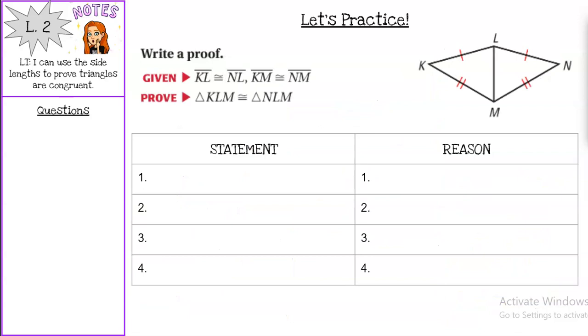And our last piece, we're going to do a proof. So write a proof. If we're given that KL is congruent to NL, and you can see that marked here with our little tick marks, so I'm going to put that statement in blank number one and our reason would be given. We always start with those givens.